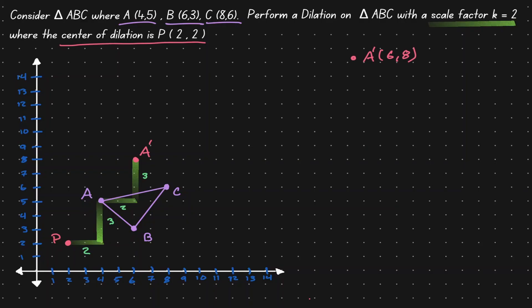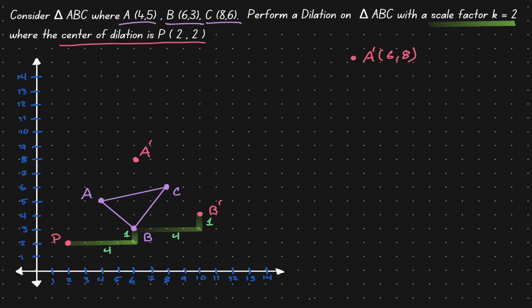Now let's concentrate on point B. Instead of looking at the diagonal distance, let's look at the horizontal distance and the vertical distance. Starting at P and going towards B, we are moving four units to the right and one unit up. So now let's repeat that movement, but starting at B: four to the right, one up, and at this very specific location, this is where we can find B prime.